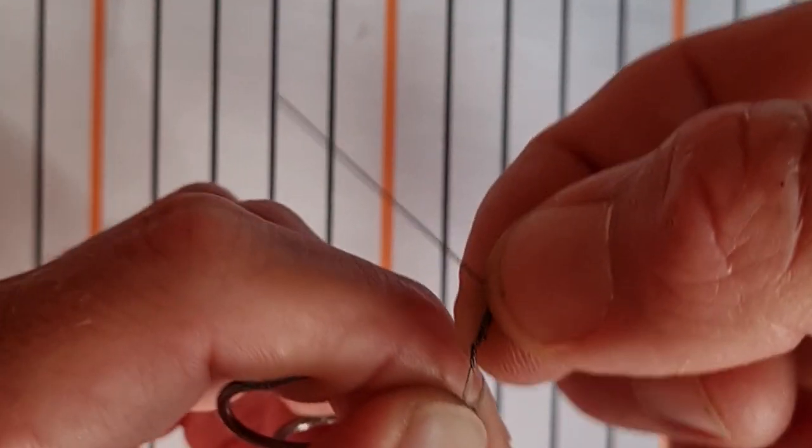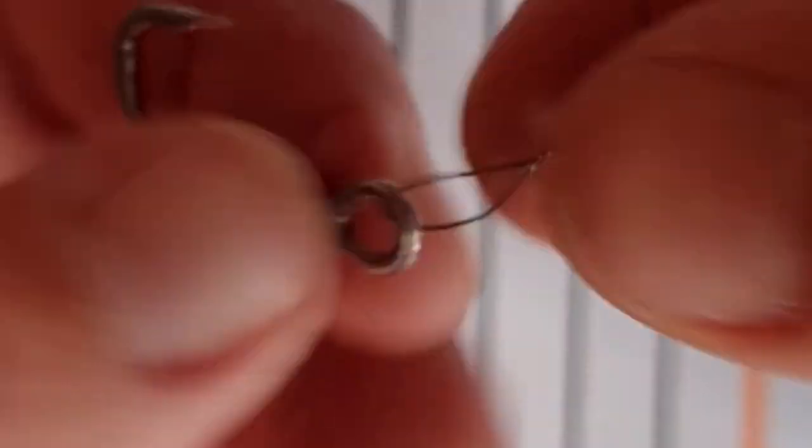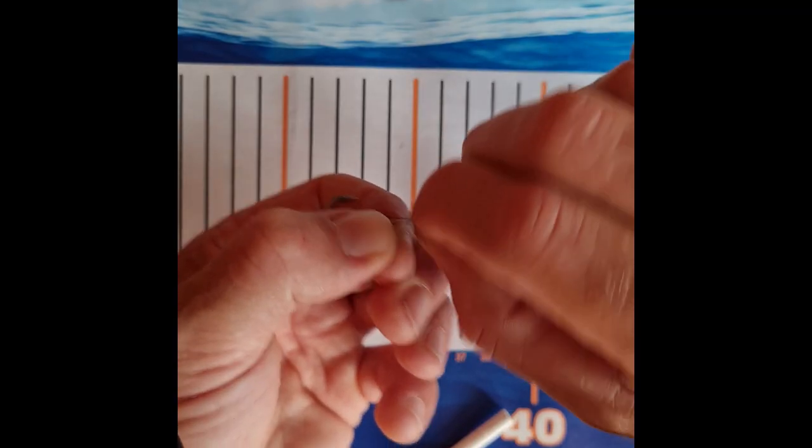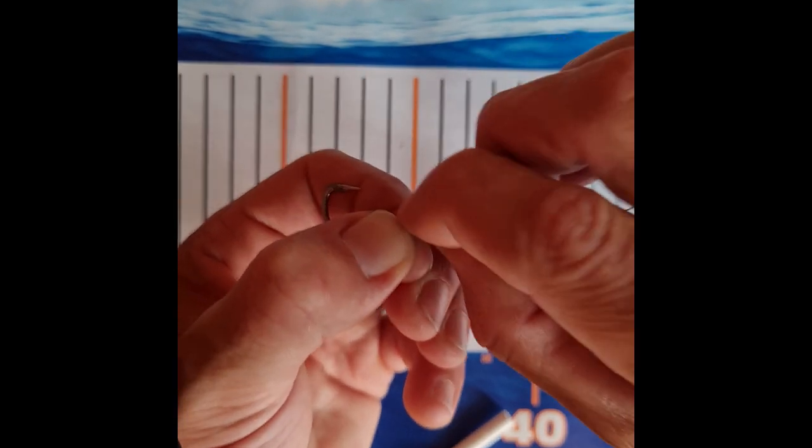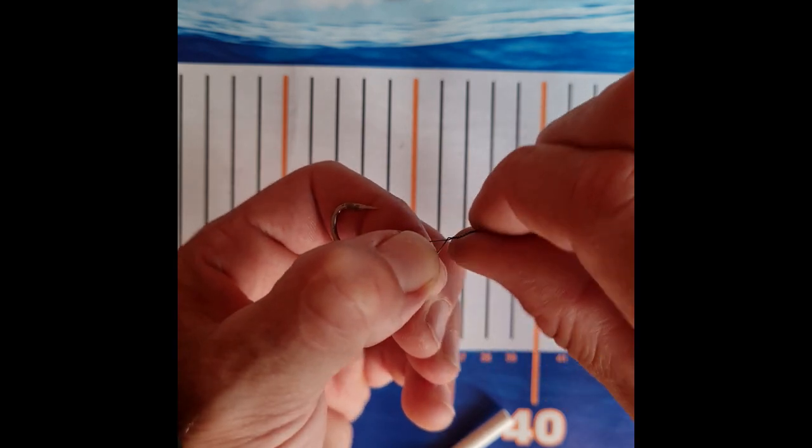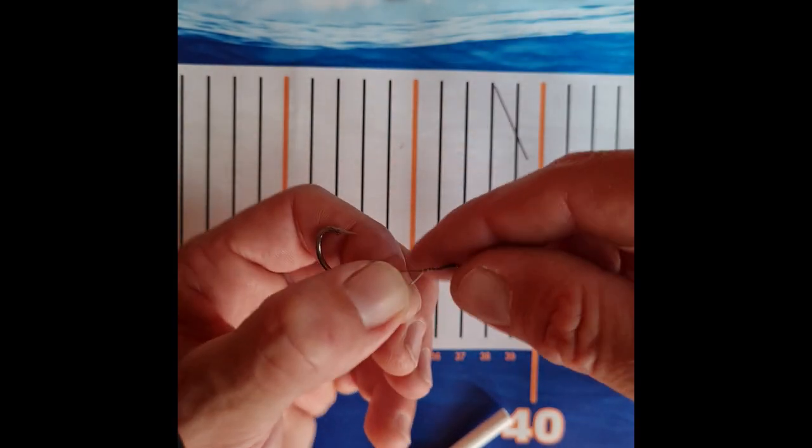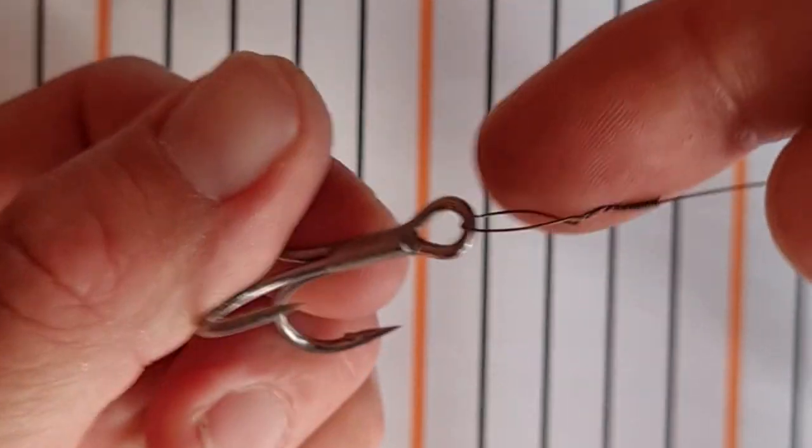There we are, that looks alright to me. And then left to right, break off the tail. There we are, beautiful. Hay wire twist.